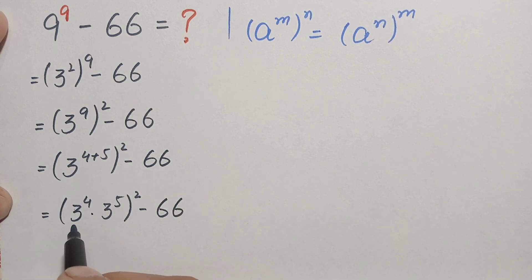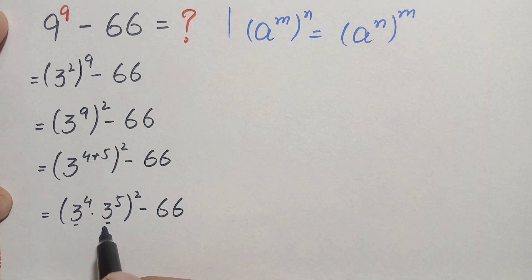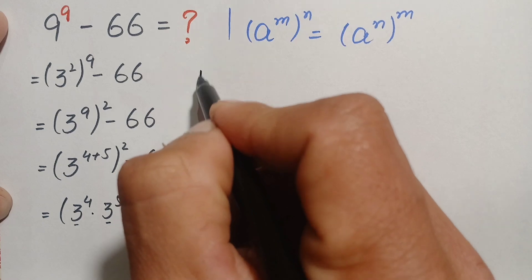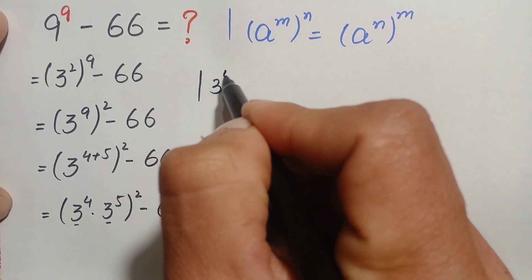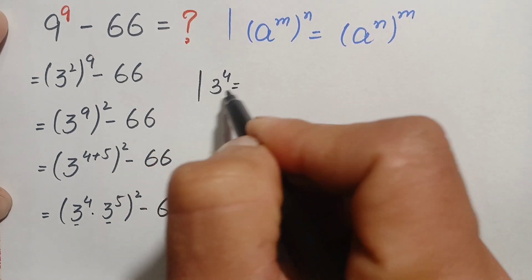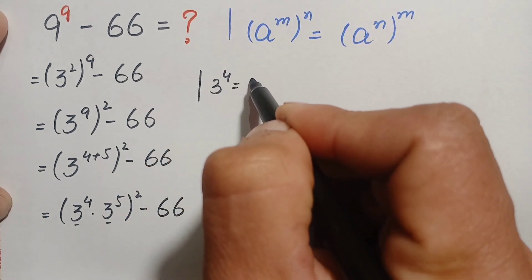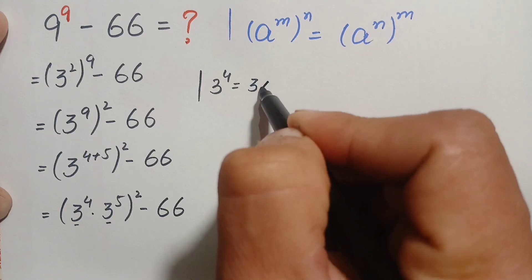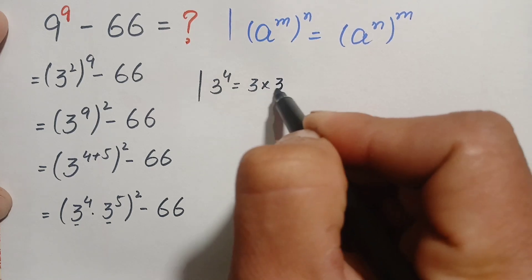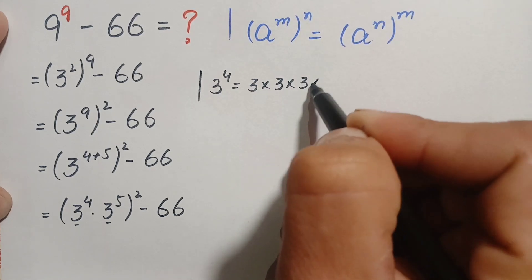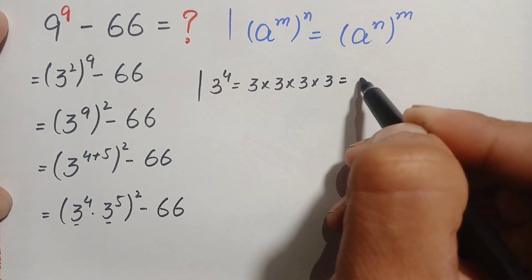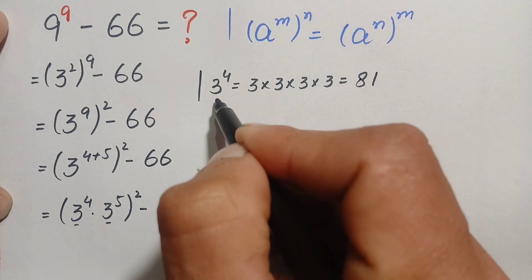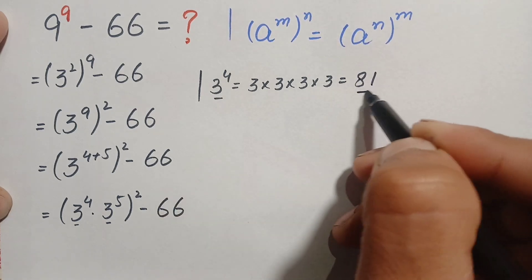Now we will find the value of 3 raised to power 4. This means we multiply the base 4 times: 3 times 3 is 9, 9 times 3 is 27, 27 times 3 is 81. So the value of 3 raised to power 4 is 81.